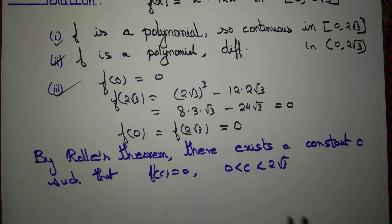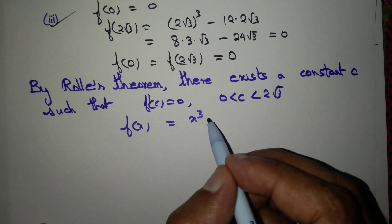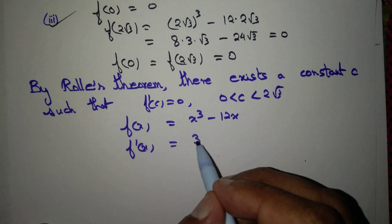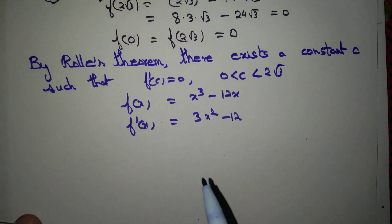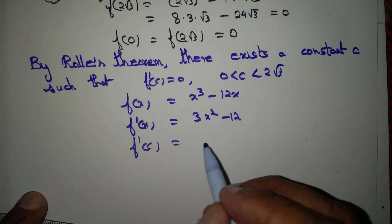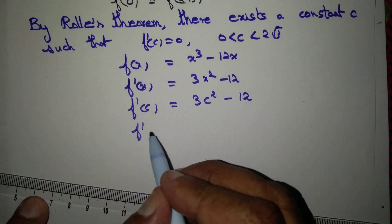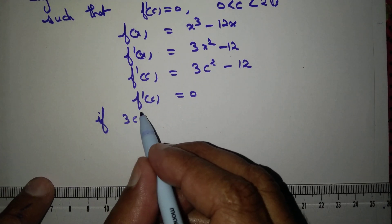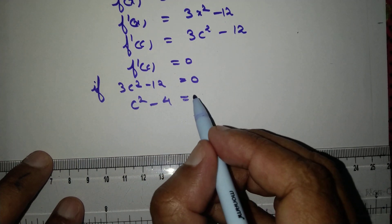Now, f(x) = x³ minus 12x. Differentiating, f'(x) = 3x² minus 12. So f'(c) = 3c² minus 12. Setting f'(c) = 0 gives 3c² minus 12 = 0.